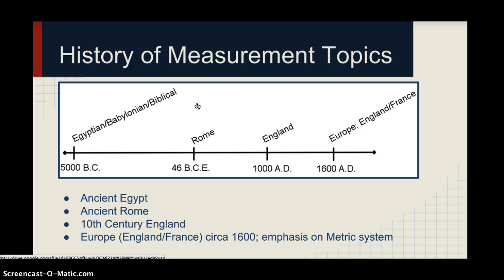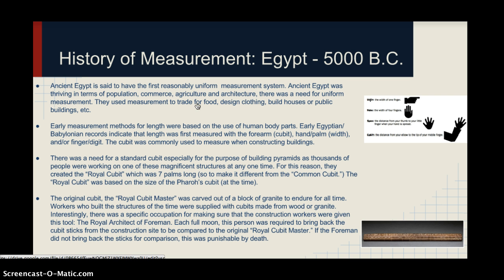I researched the history of measurement across four main periods: ancient Egypt, Rome, 10th-century England spanning about 300–400 years, and Europe in the 1600s–1700s, focusing on the development of the metric system. In Egypt, around 5000 BC, ancient Egypt is said to have had the first reasonably uniform measurement system, because their thriving society needed a way to refer to distance. With thousands of people working on a pyramid at one time, everyone needed to refer to the same unit at the same magnitude. Early measurement systems were based mostly on human body parts.